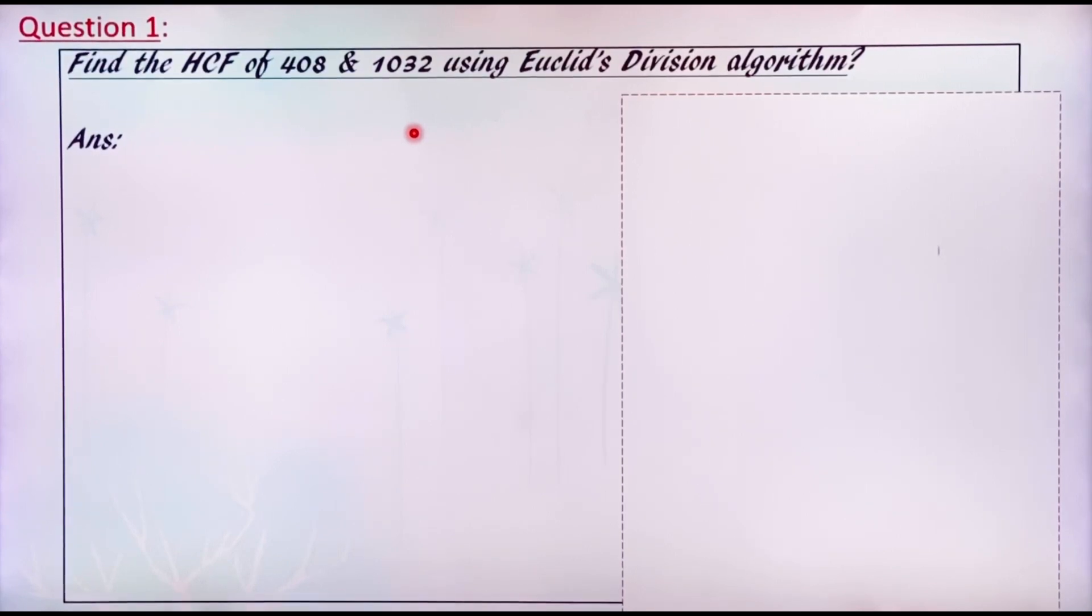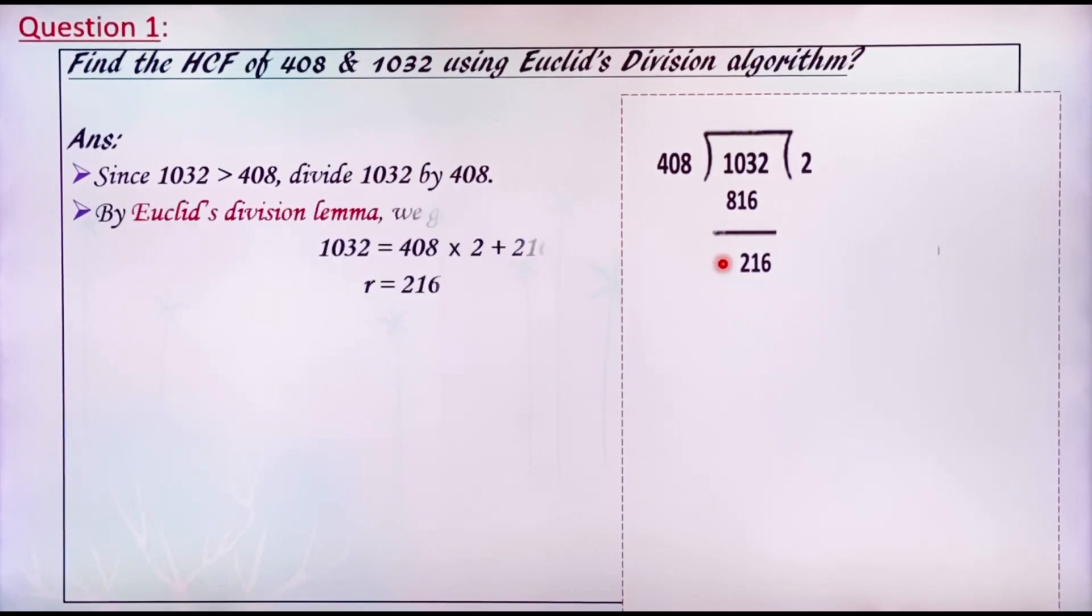Here in this question, 1032 greater than 408. So, divide 1032 by 408. By Euclid's division lemma, we get 1032 equals 408 into 2 plus 216. Since the remainder is not equal to 0, divide the divisor by the remainder obtained.